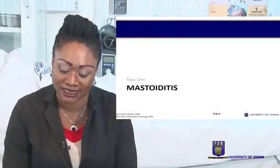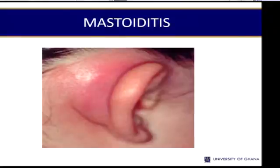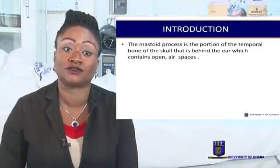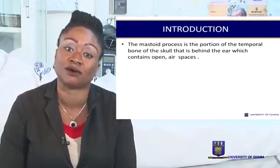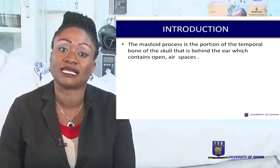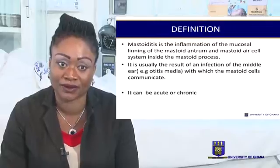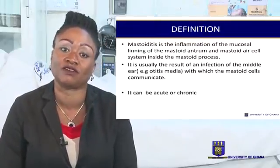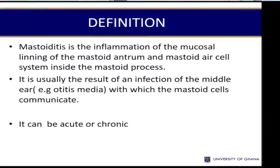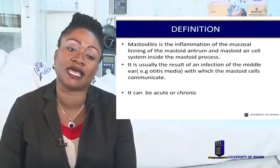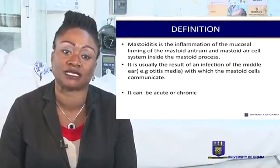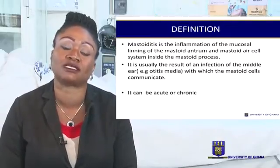Our first topic is mastoiditis. In the picture, we have a child with mastoiditis. We are referred to anatomy and physiology to revisit the mastoid process, which is the portion of the temporal bone of the skull that is behind the ear and contains open air spaces. Mastoiditis is inflammation of the mucosal lining of the mastoid antrum and mastoid air cell system, which is inside the mastoid process. It is usually the result of an infection of the middle ear, such as otitis media, with which the mastoid cells also communicate.